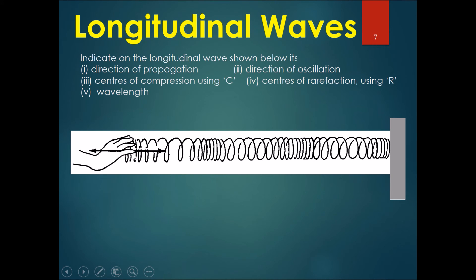Imagine holding a slinky and pushing it back and forth instead of swinging it up and down. The direction of propagation—the way the energy goes—you would see a push and an area of compression that flows all the way to the end. That's the direction the wave energy is going. The direction of oscillation is back and forth.